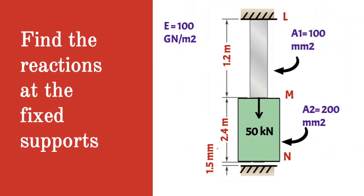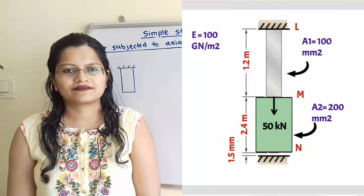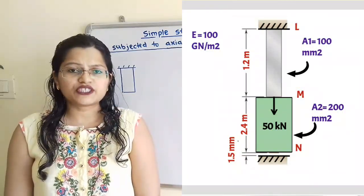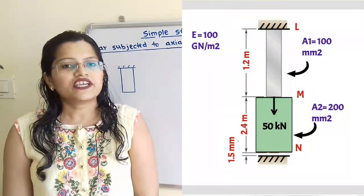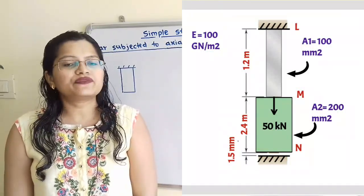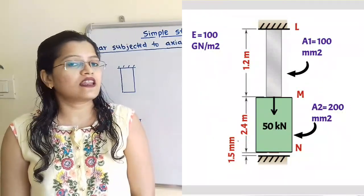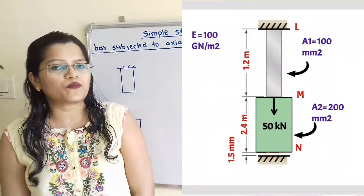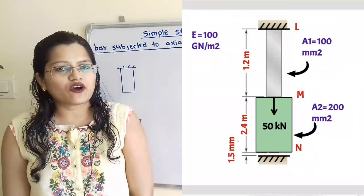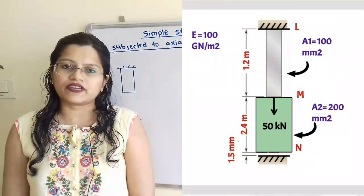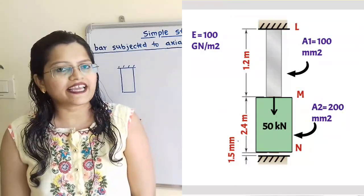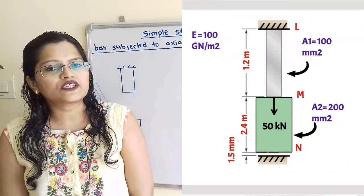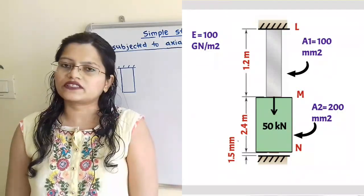Find the reactions at the fixed supports. In this question, we have to find out reactions at the fixed supports. If we observe the diagram, the total elongation delta L allowed is equal to 1.5 mm, because these two bars are in between the fixed supports. When this total elongation is taking place, the lower bar is in contact with the lower fixed support.